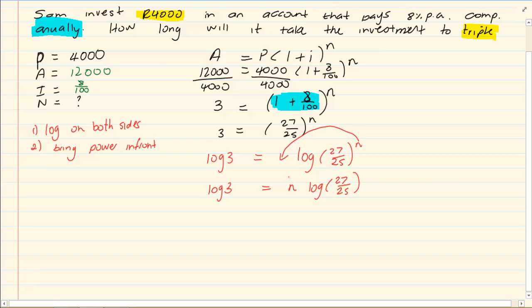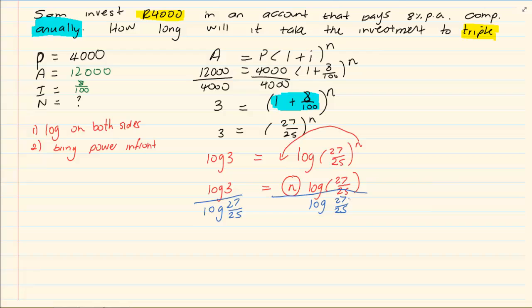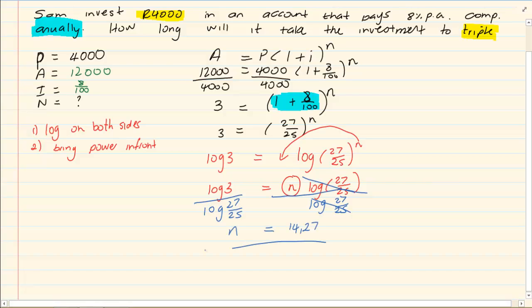How do I get my N alone? Normal standard algebra. Divide it by what is being multiplied. So I am going to divide both sides by log 27 over 25. And then you can press this into your calculator, which will give me N is equal to 14.27.